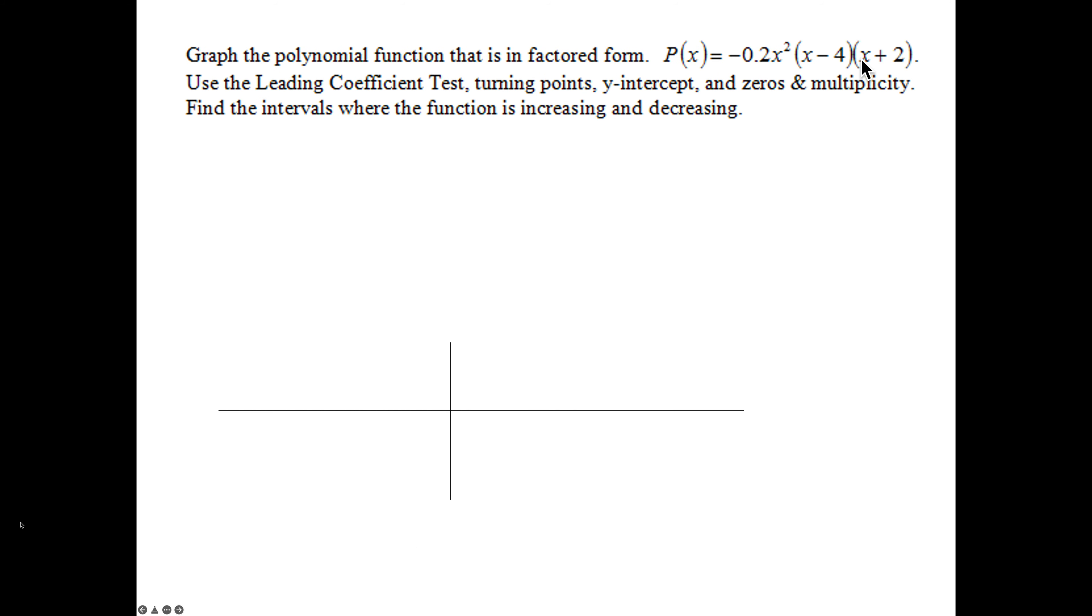Next question again, factored form again. So again, I'm going to not foil this out. I'm going to use that trick to find the first term and the last term. However, in this case, you have a GCF factor, it's not a binomial. So this negative 0.2x² has to be multiplied to the x and to this x to give me negative 0.2x to the 4th. For my constant, the negative 4 and the 2 being multiplied together also has to be multiplied to that GCF, and therefore it gives me 1.6x².